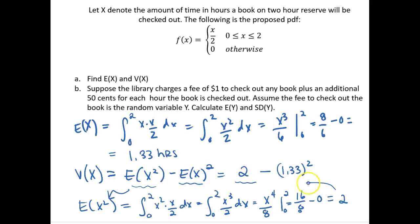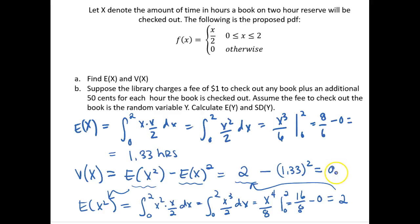Plugging that in, we can now calculate the variance. The variance has a two-step process: we find that the variance is 2 minus 1.33 squared, which equals 0.22. The units on the variance are hours squared, because the variance squares the units.